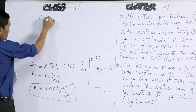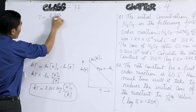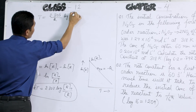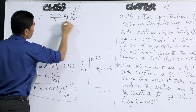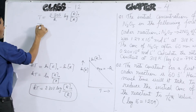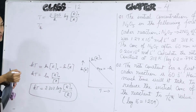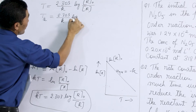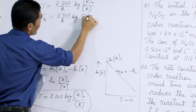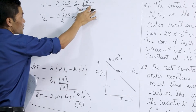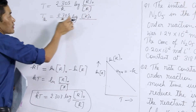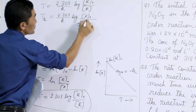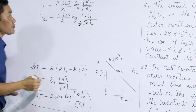From here we can write: t = 2.303/k × log(initial/final concentration). Half-life will be written as t₁/₂ and this will be equal to 2.303/k × log(R₀/R_final). Now in half-life, the concentration is reduced to half, so the final concentration will be half of the initial concentration. So in place of R we can write R₀/2.